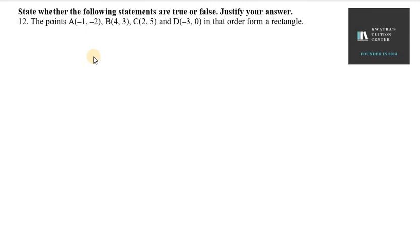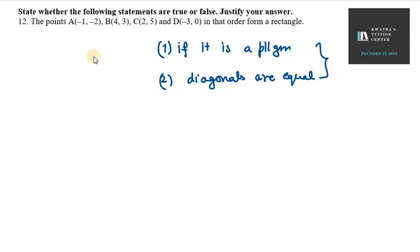So they're wondering what can this rectangle form? Rectangle can also form if first condition, it is a parallelogram. If it shows the properties of the parallelogram, then it could be a rectangle. Second is diagonals must be equal. So if we prove these two properties, that yes, they are satisfying these two conditions, then only we can say that yes, it can form a rectangle.